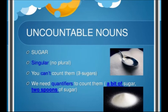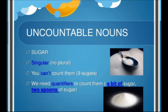Uncountable nouns are nouns that cannot be counted. For example, sugar — you cannot say one sugar or two sugar. You cannot count them. So this is how you understand nouns that are countable and uncountable.